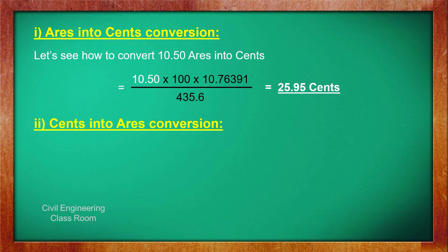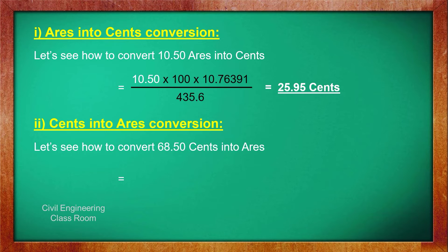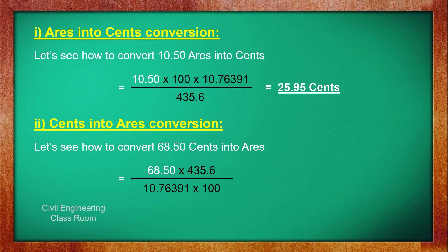The second conversion is cents to ares. Let's see how to convert 68.5 cents into ares. For that, we multiply 68.5 by 435.6, then divide that value by the product of 10.76391 and 100. The answer is 27.72 ares.